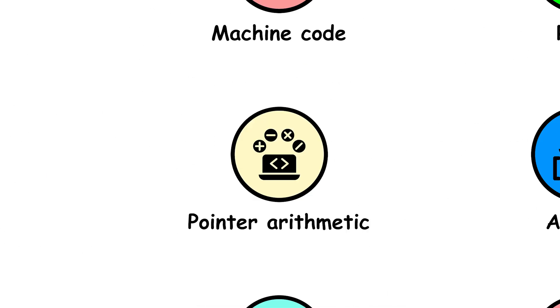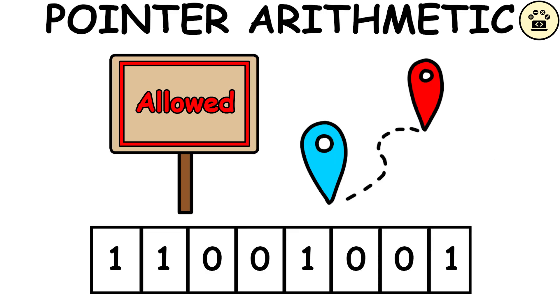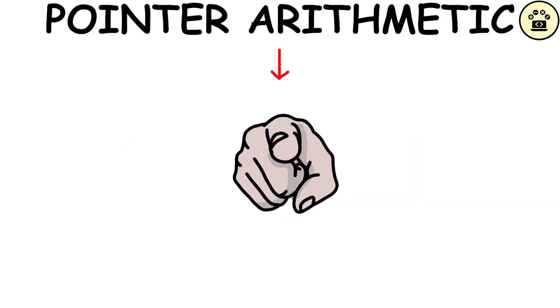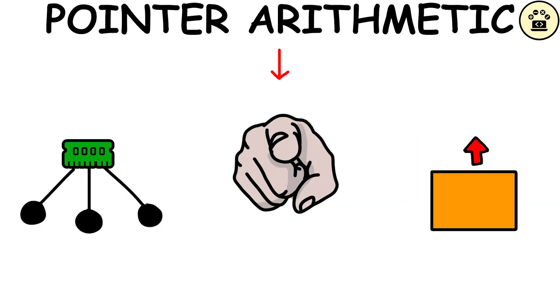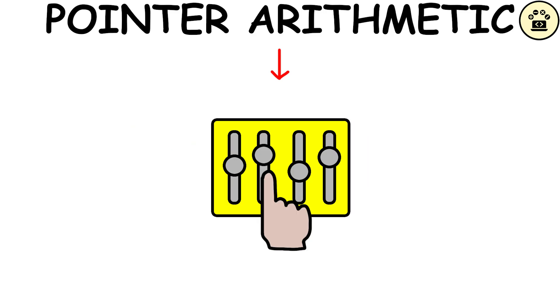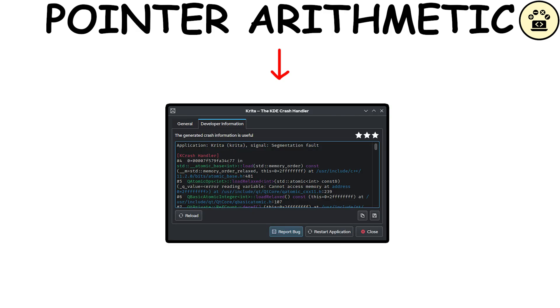Pointer arithmetic involves manipulating memory addresses by adding or subtracting from them, allowing navigation through individual bytes of memory. In manual memory management, as seen in low-level languages like C, you're responsible for allocating and releasing memory. This occurs in the heap, a flexible memory area that adjusts as per the program's needs. However, this manual control increases the likelihood of errors, such as segmentation fault, accessing or modifying memory beyond permissible boundaries.